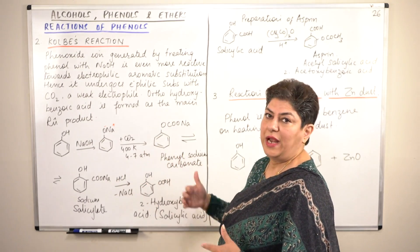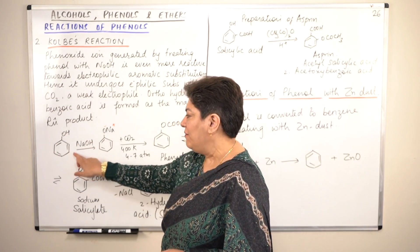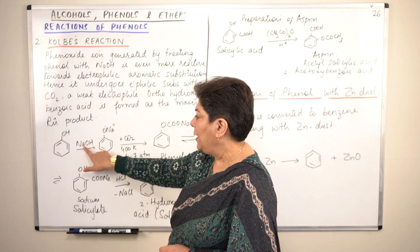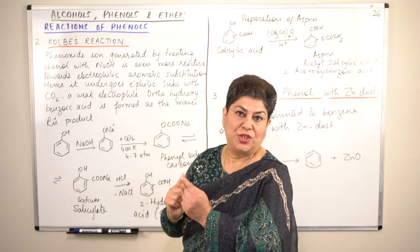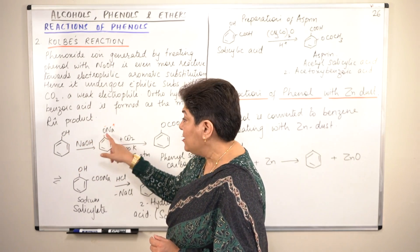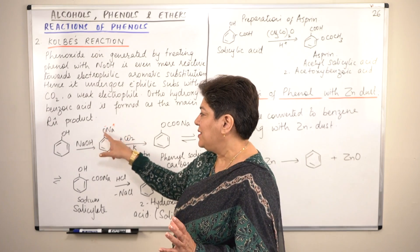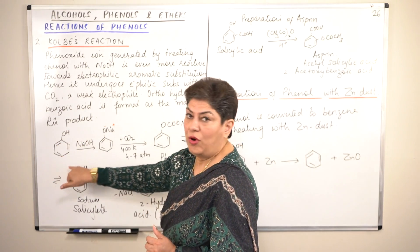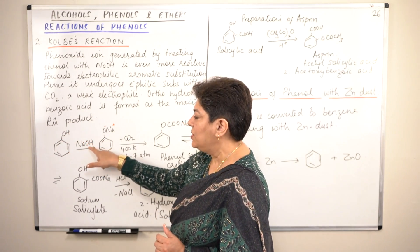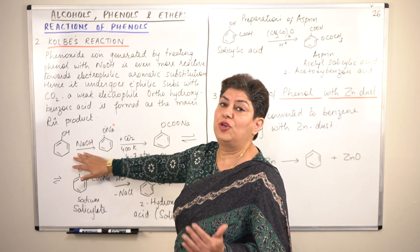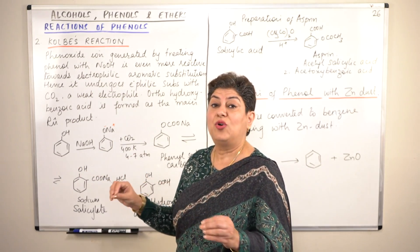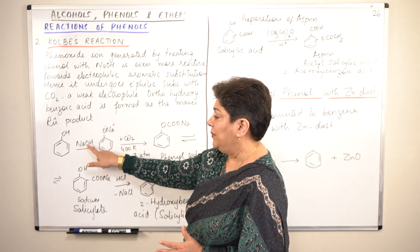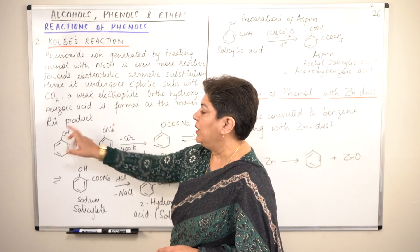Let us go through this reaction step by step. Phenol reacts with sodium hydroxide to form sodium phenoxide. The sodium from sodium hydroxide and the hydrogen from the OH group get exchanged — sodium combines with oxygen, and hydrogen combines with OH to form water. So the product is sodium phenoxide, where the O–Na bond is ionic and the rest is covalent — a kind of mixed compound.